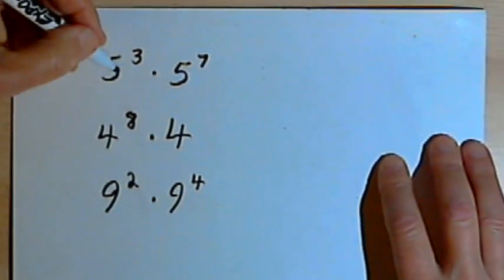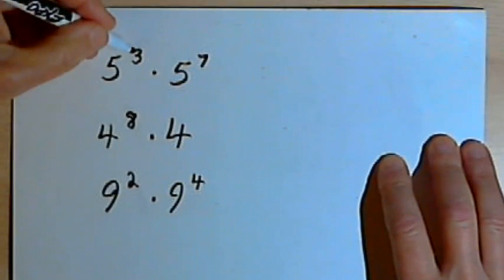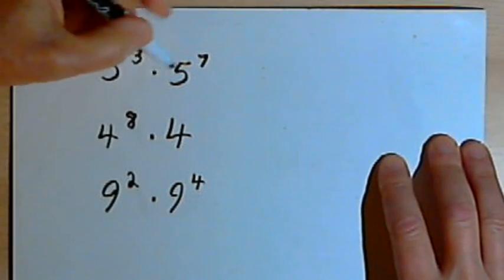So here I've got 5 cubed, or 5 to the third power, times 5 to the seventh.